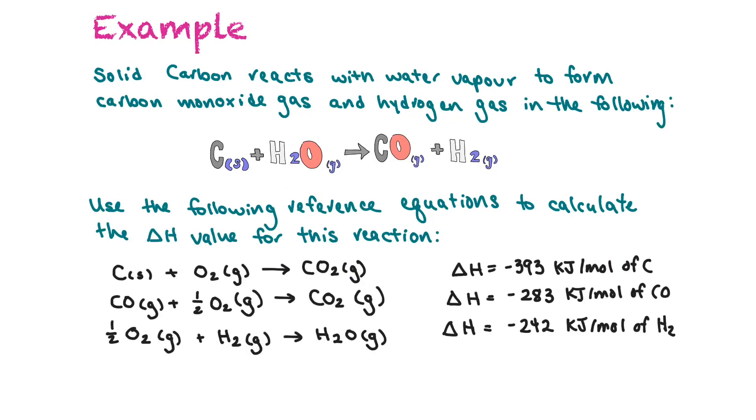So here's our example. Imagine that we have solid carbon reacting with water vapor to form carbon monoxide gas and hydrogen gas in this following reaction. So here's our reaction, and it's balanced. We can use the following reference equations to calculate the delta H value for this reaction. So we don't know the delta H value for this, but we do know the delta H values for these three reactions.